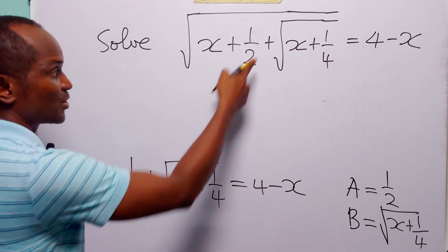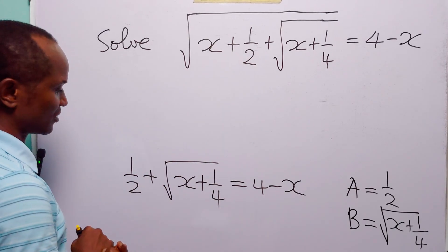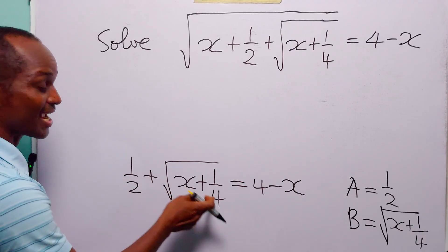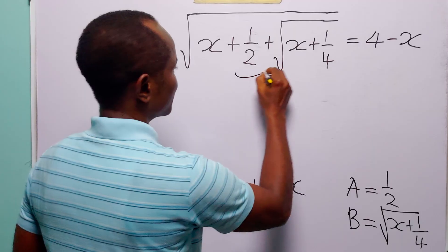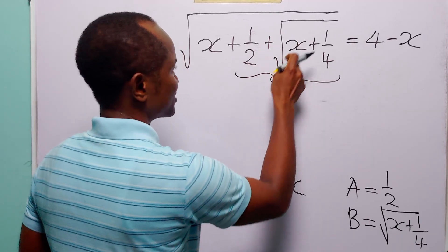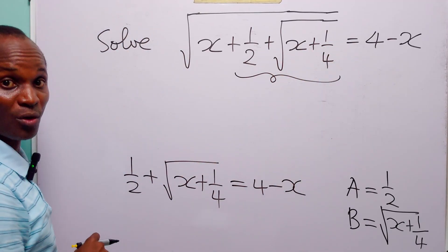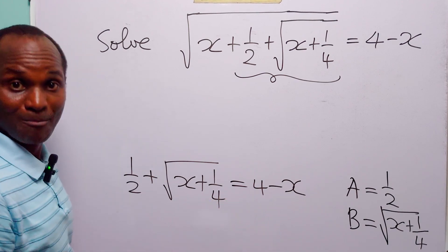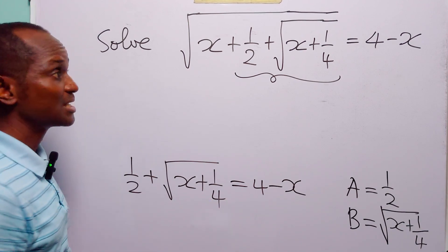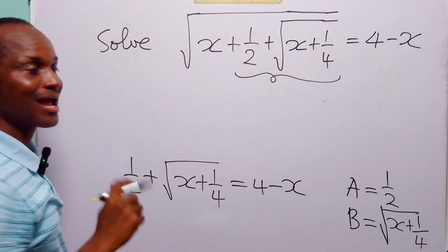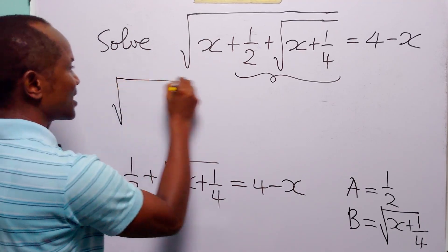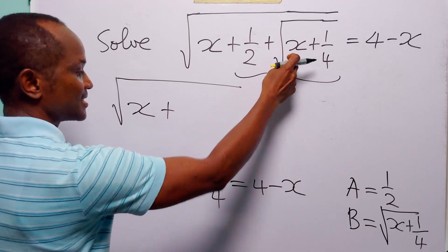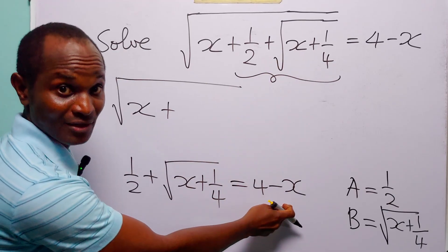Now let us compare this equation. On the left-hand side we have one-half plus the square root of x plus 1/4, and we are told that this is equal to 4 minus x. So that means we can rewrite this original equation as: the square root of x plus the square root of x plus 1/4 is equal to 4 minus x.